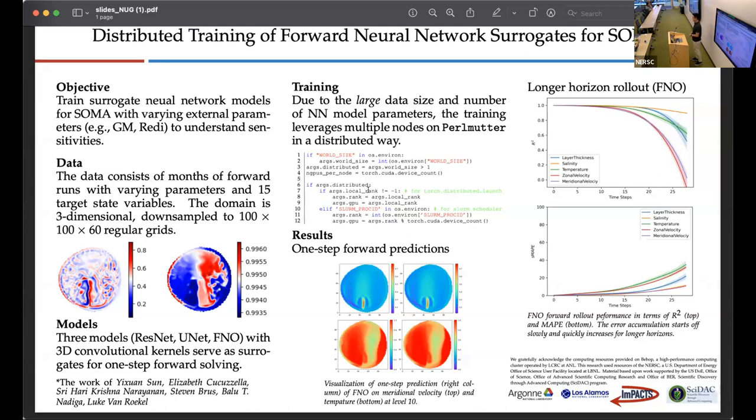Today, I'm going to talk about distributed training of a forward neural surrogate for simulating ocean mesoscale activities. The objective of our work is to train a neural network surrogate that can accurately predict the forward process of the SOMA model, as well as ultimately match its adjoints so we can understand the sensitivity of the output state variables with respect to the external model parameters better, like those parameters that can largely affect how the simulation progresses.